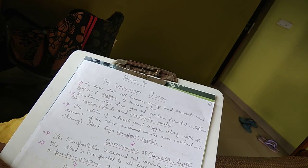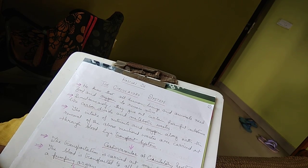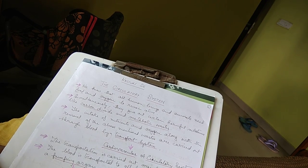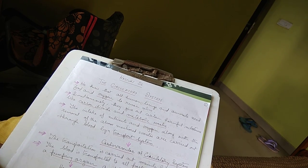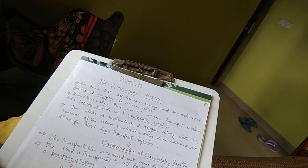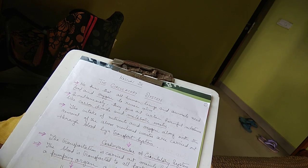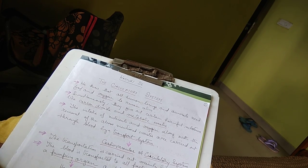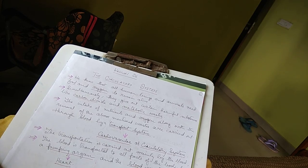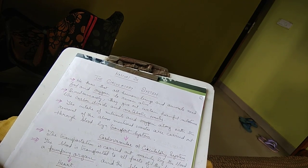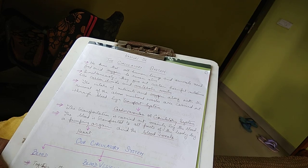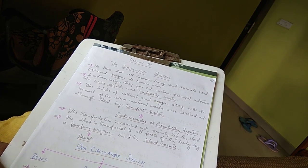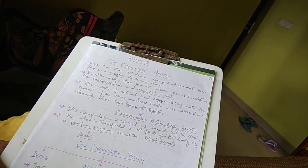The circulatory system is being discussed. Human beings and animals need food and oxygen to survive. Similarly, just as we take food and oxygen, we need to remove harmful substances like carbon dioxide and metabolic wastes. This process of taking in nutrients and oxygen, and removing carbon dioxide and metabolic wastes, happens through blood, which works through a transport system called the cardiovascular system or circulatory system. The transportation happens through blood, which is controlled by the heart, which is called the pumping organ, and the blood vessels.